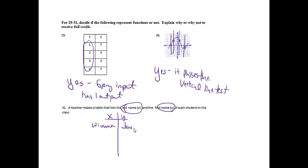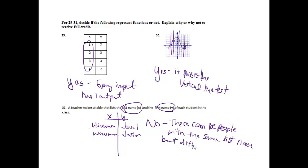So let's go with, we'll do Wiersma first. And then Wiersma, and then Y is the first name. So I'll do Jewel. And then let's say we have another Wiersma in the class. But the other student is Justin, and notice I've already made it not a function because I have one input has two different outputs. So this is definitely going to be no, because there can be people with the same last name but different first names.